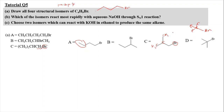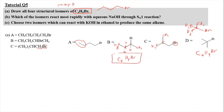Checking structure D (tert-butyl bromide): it has carbons 1, 2, 3, 4 — giving C₄. Hydrogen count: 3 + 6 + 9 = H₉, and one bromine — consistent with the molecular formula C₄H₉Br. For structure C, counting gives 4 carbons and 9 hydrogens, consistent. Structure D can also be represented as (CH₃)₃CBr, where the central C is attached with three methyl groups and the bromine.